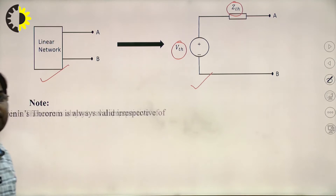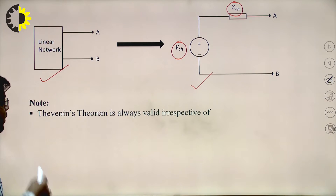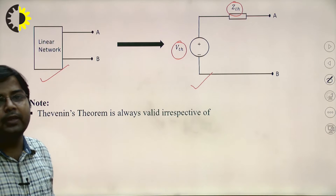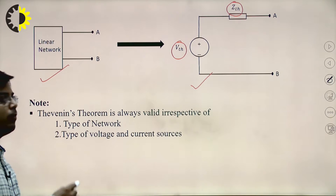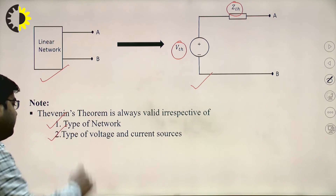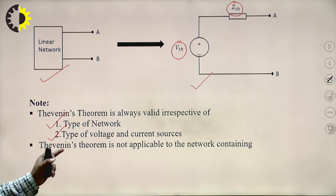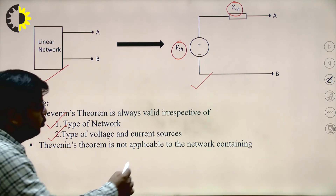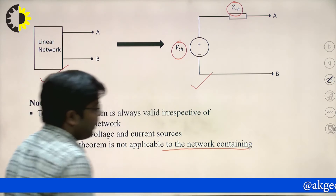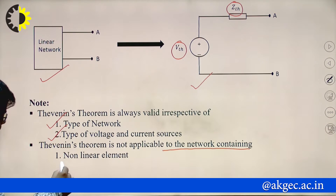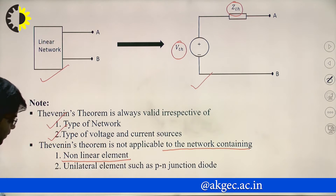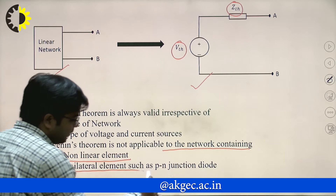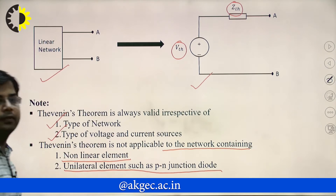Some important points to note: Thevenin's theorem is always valid irrespective of the type of network and type of voltage and current source. However, Thevenin's theorem is not applicable to networks containing non-linear elements or unilateral elements such as p-n junction diodes.